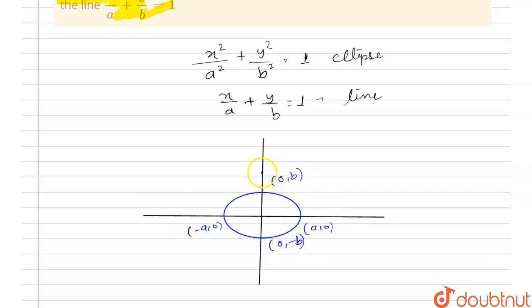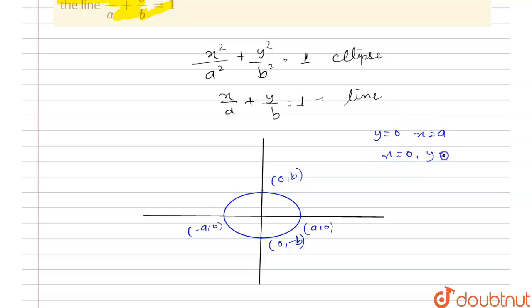This is our major axis and minor axis. Now we draw the line x/a + y/b = 1. When we put y = 0, we get x = a. When x = 0, the value of y = b. So the line passes through (a, 0) and (0, b).